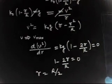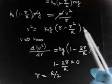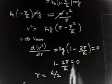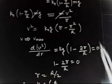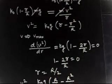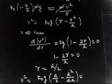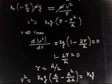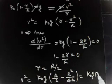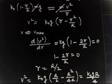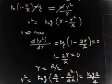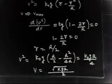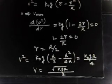When radius is R/2, velocity is maximum. Substituting r = R/2 into v² = k₀g(r - r²/R): v² = k₀g(R/2 - R²/4 / R) = k₀g(R/2 - R/4) = k₀gR/4. Therefore the maximum velocity is v = √(k₀gR/4) = (1/2)√(k₀gR). This is the maximum permissible velocity for the motorbike along this circumference.